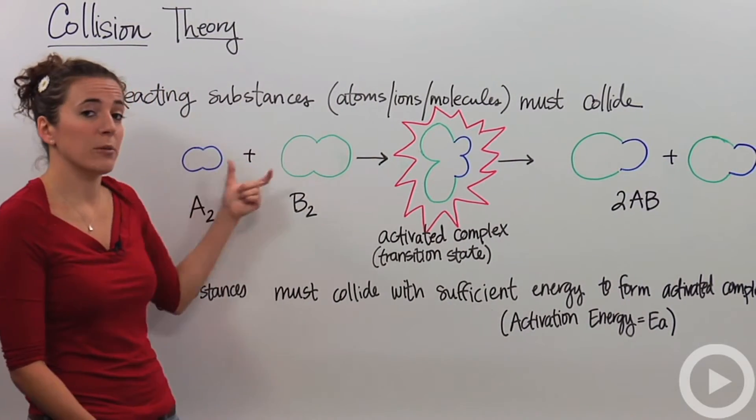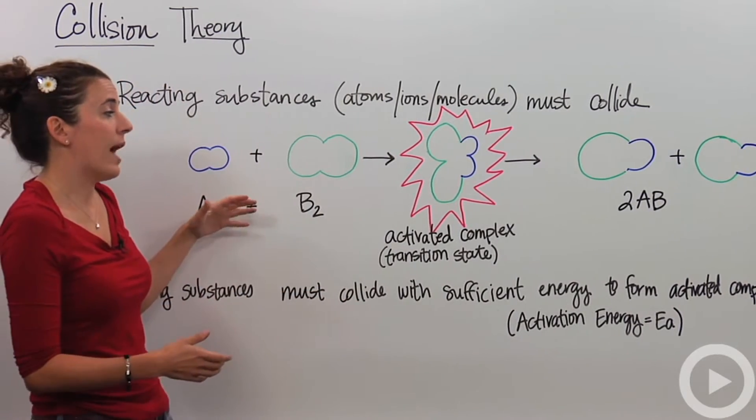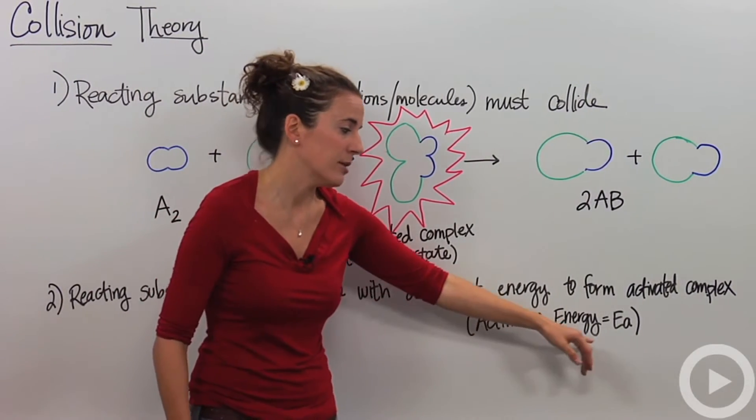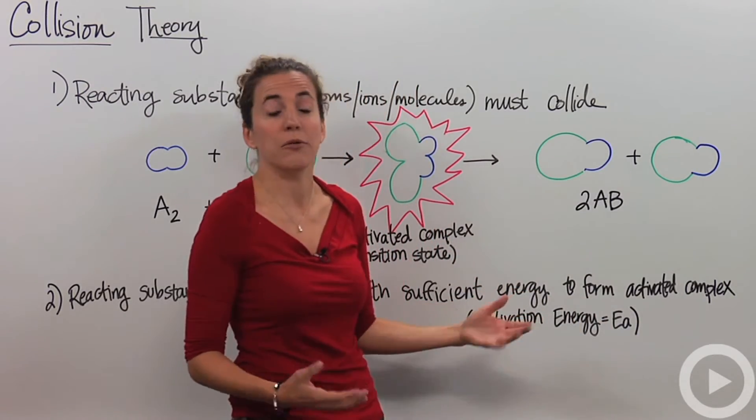If they don't collide with enough energy, then they're not going to react at all. So that energy is going to be called our activation energy to get to our activated complex. And you might see the symbol E with a subscript A to denote that.